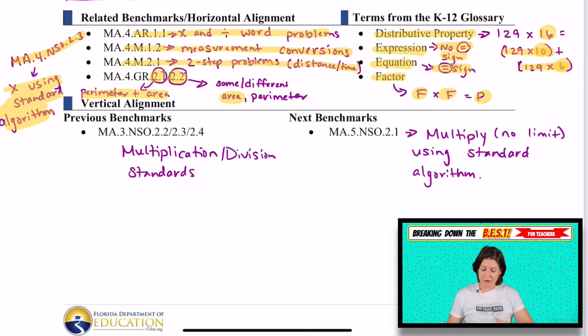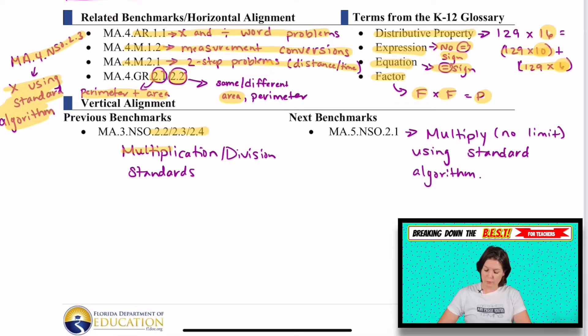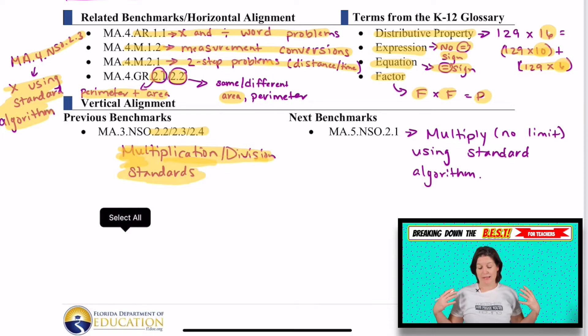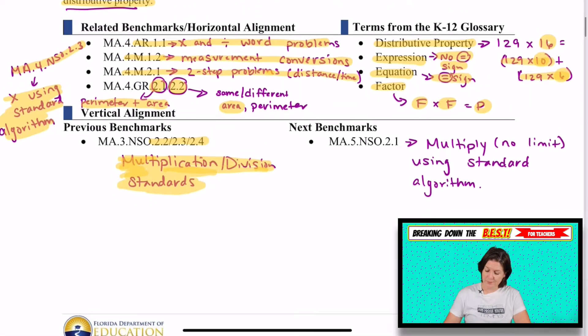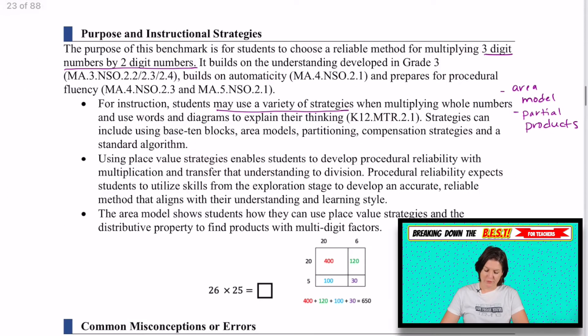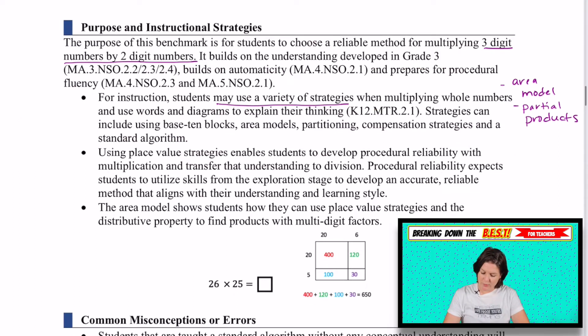So where are they coming from and where are they going? Well, in third grade, they had 2.2, 2.3, and 2.4, which were the multiplication and division standards there, and basically just learning what multiplication and division is and how to use a bunch of different strategies to solve it. Now we're using all that knowledge from third grade, the automaticity that they should be developing in fourth grade to apply it to a standard like this. Next year, in fifth grade, they'll have 5.NSO.2.1, which is where they're multiplying with no limit using a standard algorithm. See, for the purpose and instructional strategies, let's see what jumped out at me.